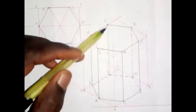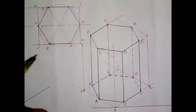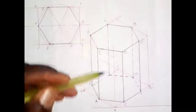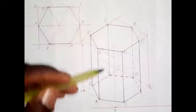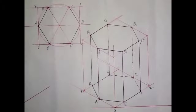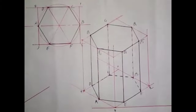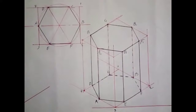I then connect D1 to D, A1 to A, E1 to E, F1 to F, B1 to B, and C1 to C. For B1 and C1, since these are the parts hidden at the back, I use short dashed lines. That is how to draw an isometric hexagonal prism. All you need to do is practice and you will definitely master it. Thank you for watching and God bless you.